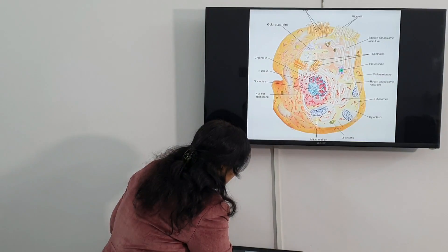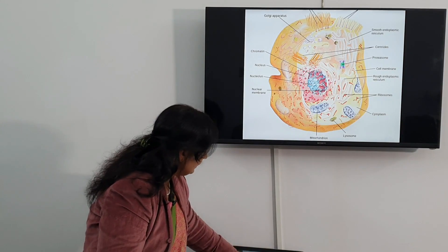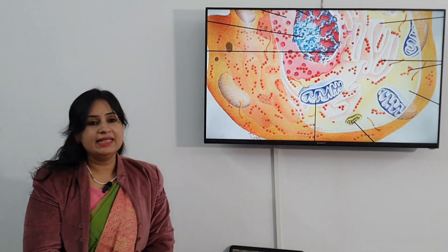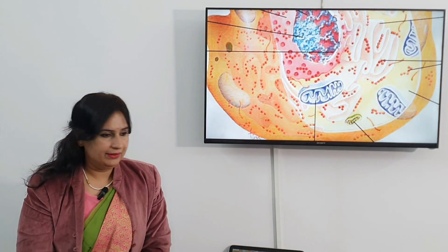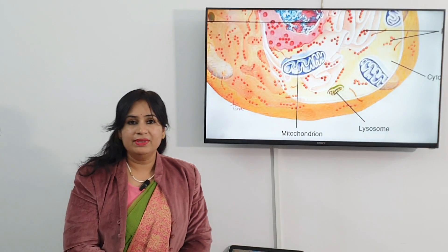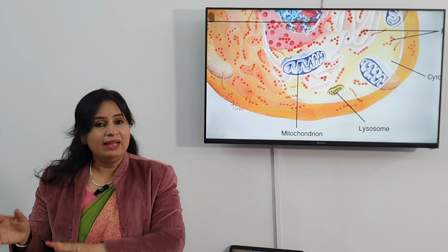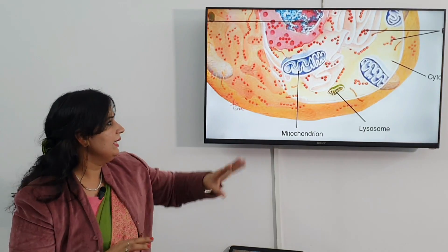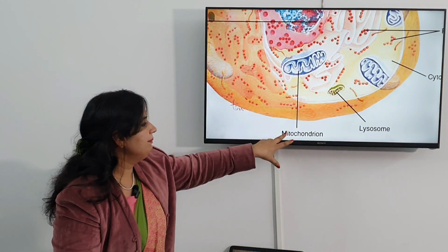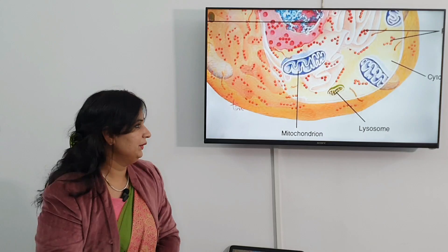Moving to the next cell organelle, you can see this structure here — this is mitochondria. Mitochondria is known as the powerhouse of the cell and it generates energy for the cell. The energy is supplied by mitochondria by breaking down of the glucose molecules.